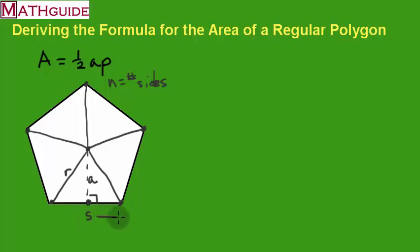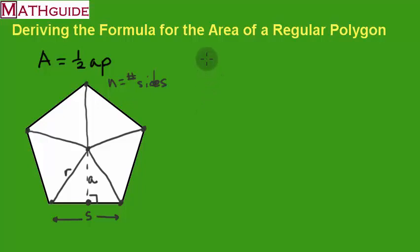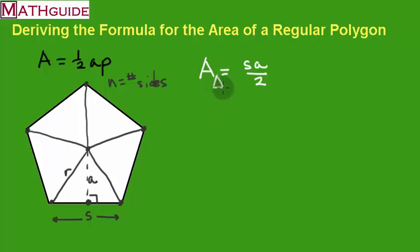The length of the segment from vertex to vertex is called the length of a side — that is one side. Since the apothem is a perpendicular bisector, I can calculate the area of the triangle. To calculate the area of one isosceles triangle, I use the formula: base times height divided by 2. The base is S and the height is A, so the area of one isosceles triangle is S times A divided by 2.